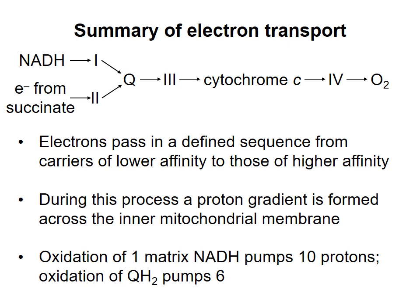To summarize electron transport: electrons from NADH and from succinate pass through complexes I and II, respectively, to reduce coenzyme Q. From there, electrons pass through complexes III and IV, ultimately being added to oxygen to produce water. Electrons are transferred from one group to the next in a defined sequence. The energy from this process is used to create a proton gradient across the inner mitochondrial membrane, with NADH allowing pumping of more protons than QH2. In the next videos, I will describe how the electrochemical gradient created by the electron transport chain is used to synthesize ATP.